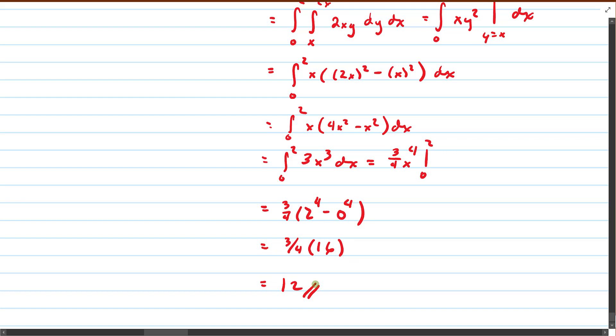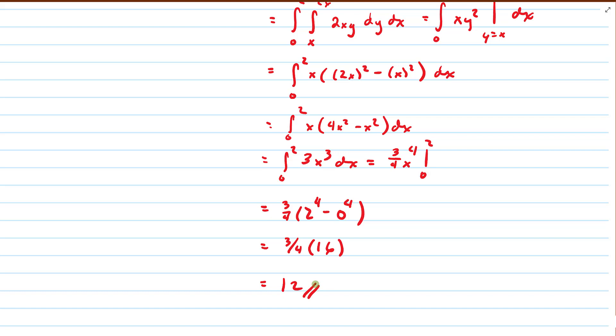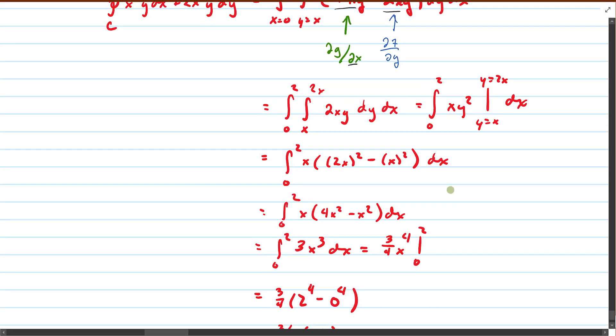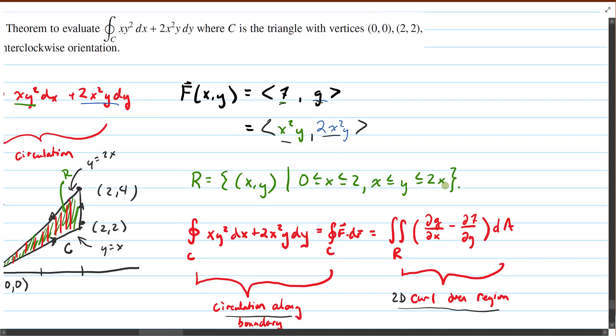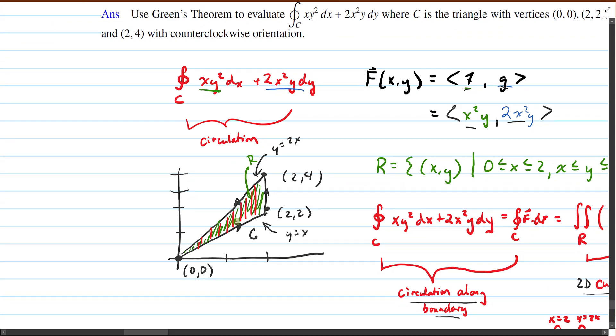And so we end up with an answer of 12 for the sum of the circulation, or excuse me, the sum of the curl over the entire region. But of course by Green's theorem, finding the sum of the curl across the entire region is equivalent to finding the circulation along the boundary.